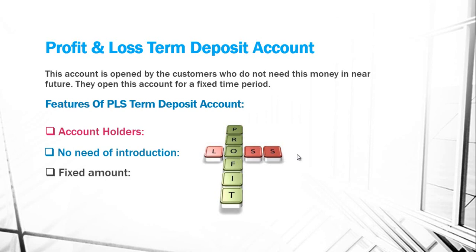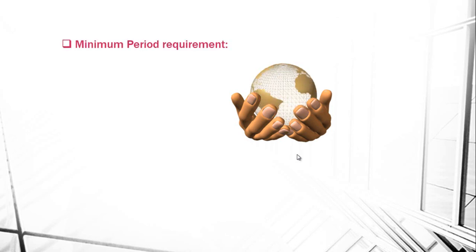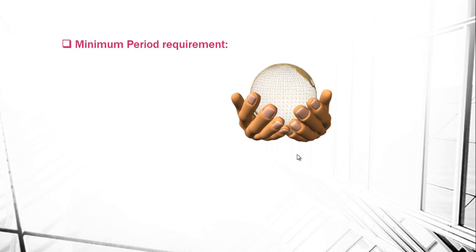Third is fixed amount: the amount remains fixed till the expiry date. Fourth is fixed time period: the time period is fixed for this account, which is determined at the time of opening of the account. Fifth is minimum period requirement: this account can be opened for a minimum period of six months.